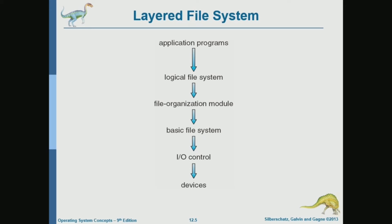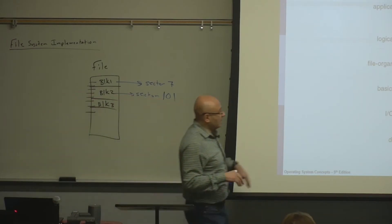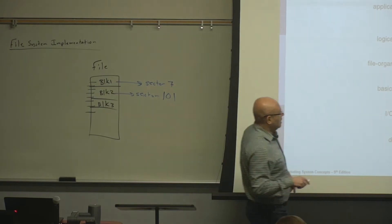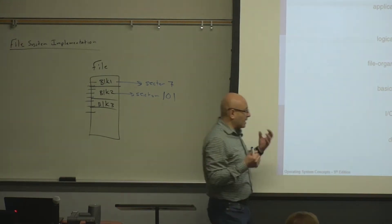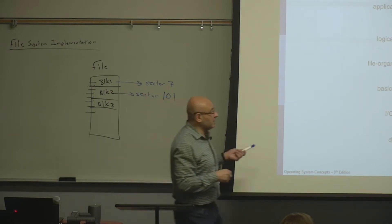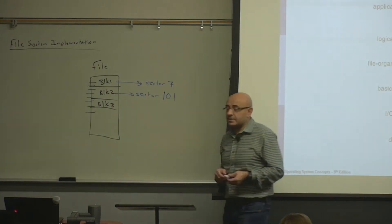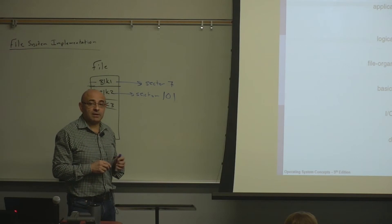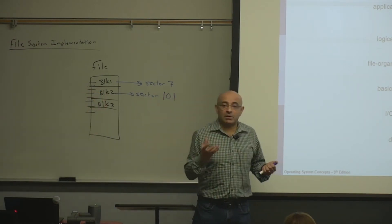A file system is typically organized in layers. Every file system is different, but this is a generic organization common to most file systems. The bottom layer is the low-level layer that talks to the hardware — the actual device. In the context of file systems, the device we're talking about is the disk.